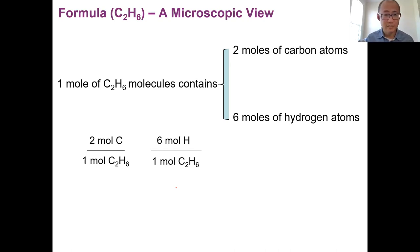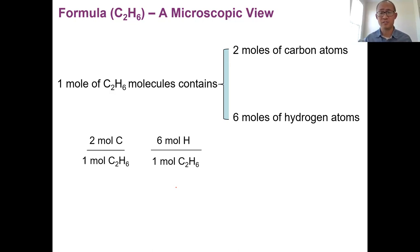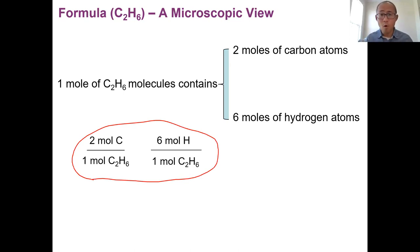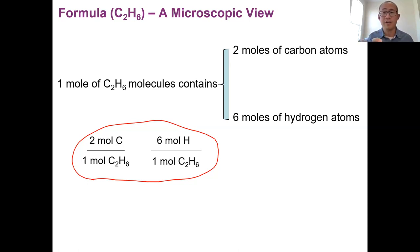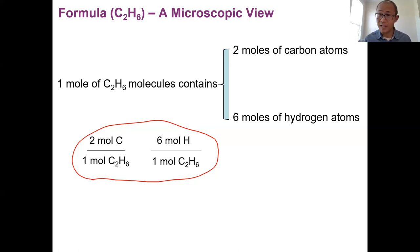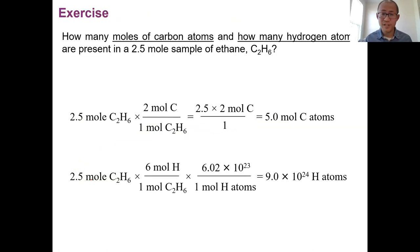Similarly, ethane C2H6 — the subscripts 2 and 6 mean one mole of C2H6 has two moles of carbon and six moles of hydrogen. Because the moles of the molecule are related to the moles of atoms, we can create conversion factors: one mole of ethane equals two moles of carbon; one mole of ethane equals six moles of hydrogen. Mole is a larger, more useful quantity because we can relate it to mass.